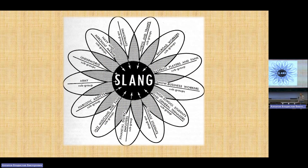Now slang. Slang comes from various sources — this flower diagram is not complete; you can add more and more petals: army, underworld, Navy, merchant marine, immigrants, hobos and tramps, railroad workers, baseball players, show business workers, high school students, college students, financial district employees, jazz musicians and fans, narcotic addicts, and more. From these special groups come various words that fill the slang niche.